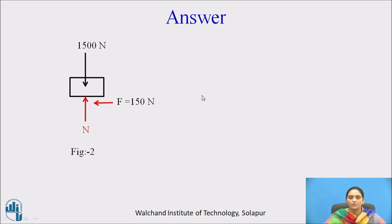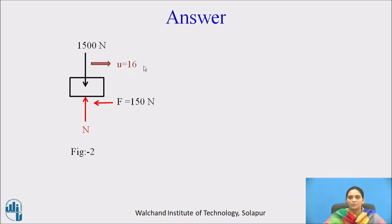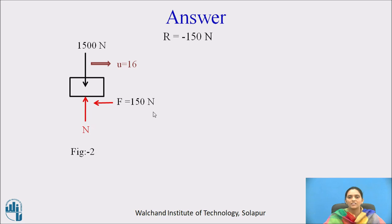Here is the solution. When the 300 N force is removed, three forces remain: the self-weight of the block (1500 N), the support reaction N, and the frictional force of 150 N. We now analyze the body with these three forces. The initial velocity is 16 m/s. After removal of the 300 N force, the body will stop after some time — we need to determine that time. In the X direction, there is only one force: the frictional force. So the resultant is −150 N, according to the sign convention for the direction of force.